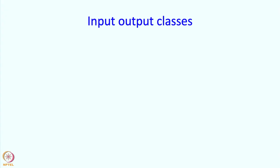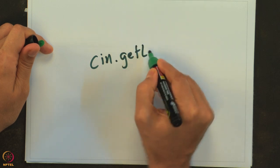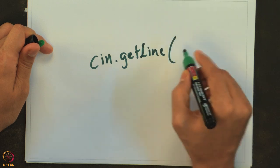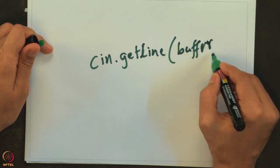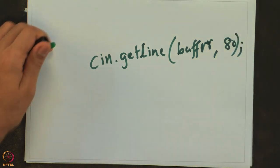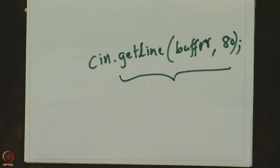Now, like graphics classes, there also are input output classes which you have been using. cin and cout are objects of class istream and ostream respectively, and they are defined in the file iostream. If you remember, we had a command cin.getline of some char buffer name and maybe the length of the char buffer. So now you can see by the syntax that this is a member function — you have been using member functions already in graphics as well as in I/O.